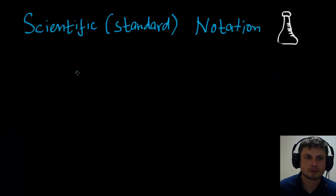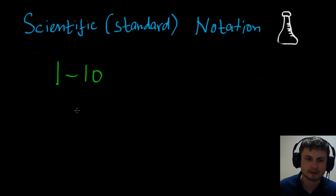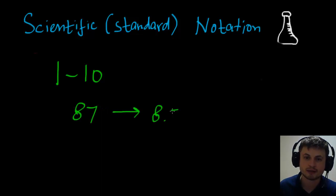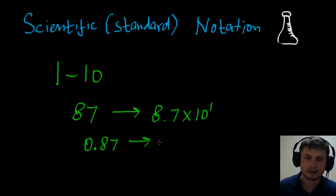One important side note: the number at the beginning of scientific notation must be between 1 and 10 — it cannot be less than 1 or more than 10. So if you have 87, you must rewrite it as 8.7 times 10 to the power of 1. If you have 0.87, you rewrite it as 8.7 times 10 to the power of minus 1.